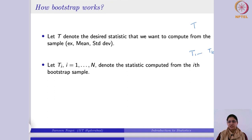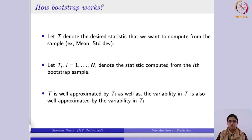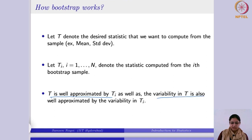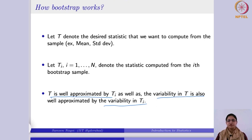If T is the desired statistic — say, sample mean — then Ti's denote the statistic computed from the ith bootstrap sample. Each Ti is calculated from a sample meant to mimic a draw from the original population. If you take the average of these, it should give you an idea about T itself, and its variability can also be approximated. The term 'bootstrap' refers to pulling oneself up by one's bootstraps — in statistics, it means we are trying to infer from the data itself, using data to inform us and enhance our estimates based upon that sample.